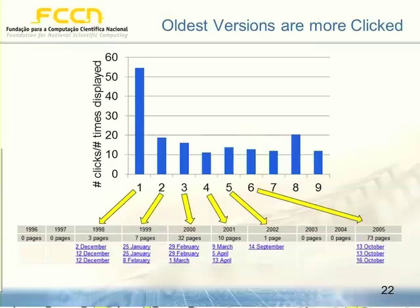This also gives us more information about where users click. The first bar represents the first column of results, the second bar the second column, and so on. What we can see in this graph is that users clicked much more on the first column than on the others — once again showing that users tend to click most on results from the oldest years.